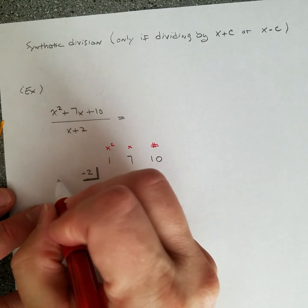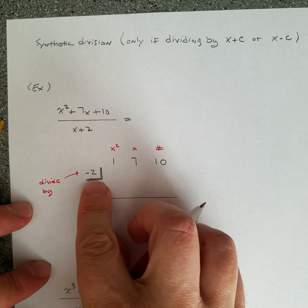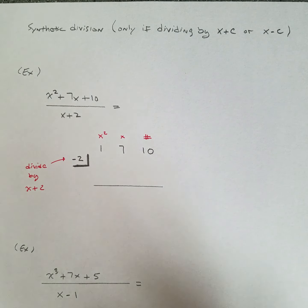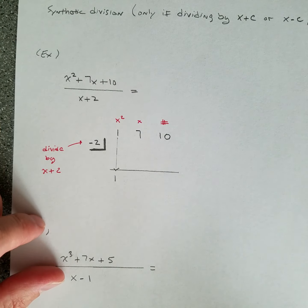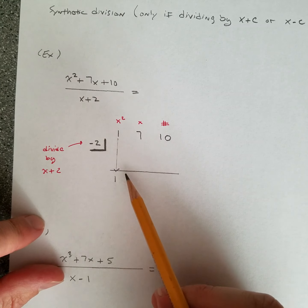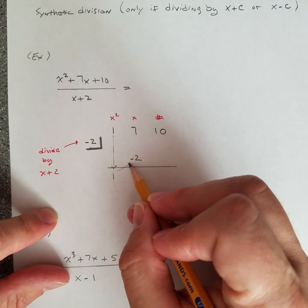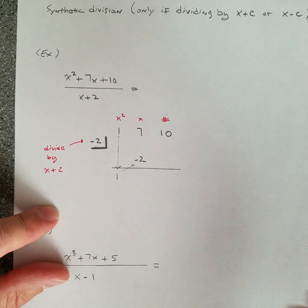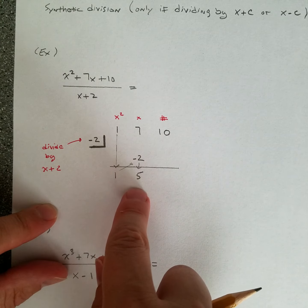Now this is a mathematical procedure and you just have to learn the steps. The first step is we carry the 1 down and write it right there. After that, we multiply that by the negative 2 in the box — negative 2 times 1 is negative 2. Then we add: 7 plus negative 2 is 5. So it's a zigzag pattern: bring down, multiply, add, then multiply again.